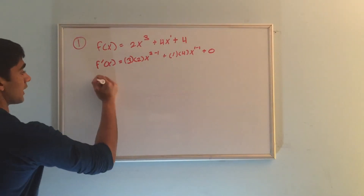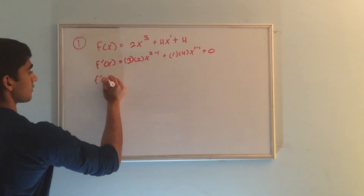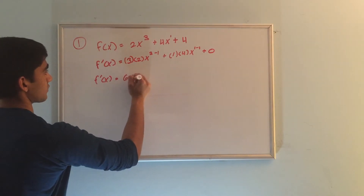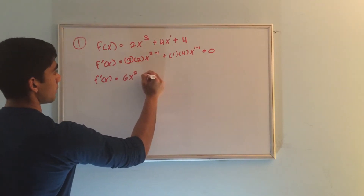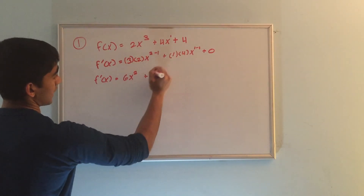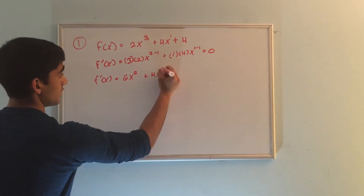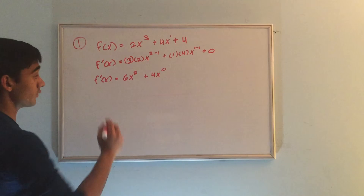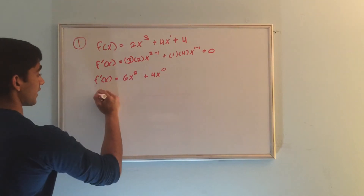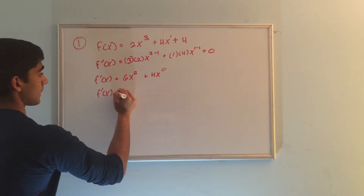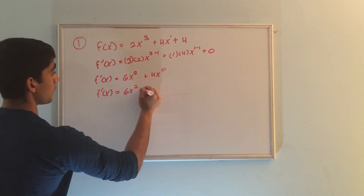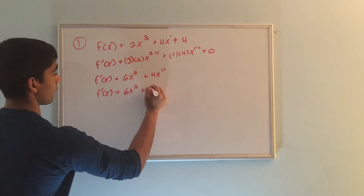So working this out, we get f prime x equals 3 times 2 is 6, x to the 3 minus 1 is 2, plus 1 times 4 is 4, and 4x to the 1 minus 1 is 0. We know x to the 0 is 1. So we can write this as f prime x equals 6x squared plus 4.